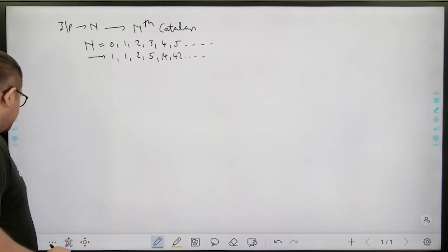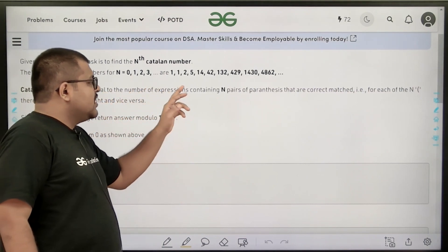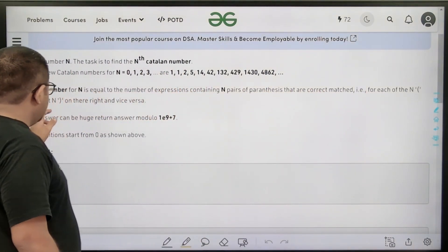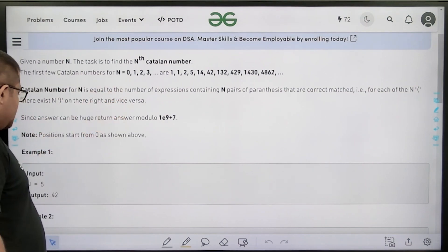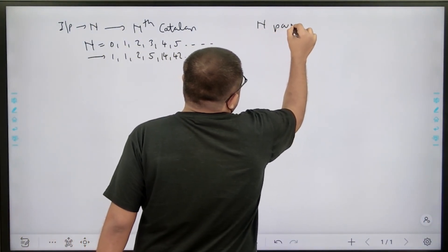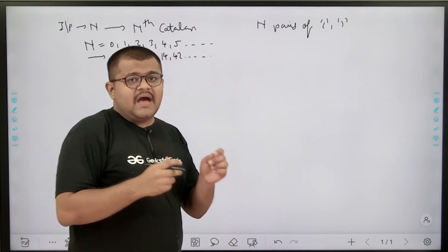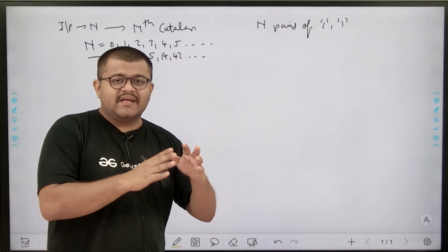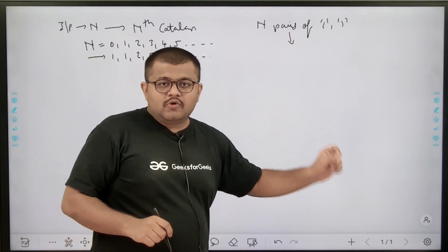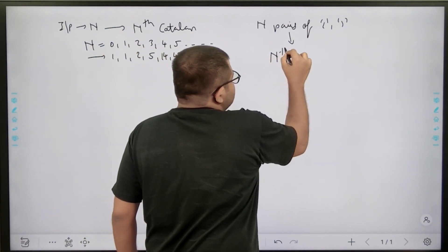Now let's read further. The Catalan number for N is equal to the number of expressions containing N pairs of parentheses that are correctly matched — that is, for each of the N opening brackets there exists a closing bracket on its right and vice versa. So basically, if I have N pairs of opening and closing brackets, the number of ways of arranging them such that they are correctly matched is the nth Catalan number.